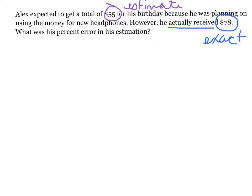If we set up our error equation and find his error, we take the absolute value of the estimate of $55 minus the exact of $78. This equals the absolute value of negative 23. Absolute values give you positive, so it's simply 23 is his error.